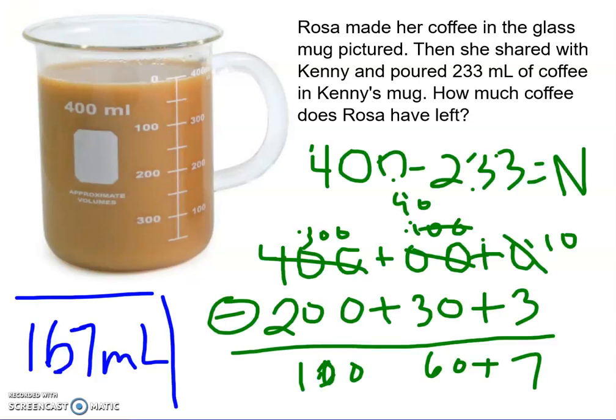All right. So the equation you should have come up with is 400 because that's the amount of coffee that was pictured here. 400 milliliters. If it's full, 400 minus 233 equals N because that's going to tell us how much she had left after she gave Kenny 233. And then when I subtract that out, I get 167 milliliters of coffee.